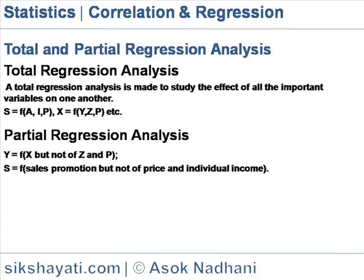Total and Partial Regression Analysis. A total regression analysis is made to study the effect of all the important variables on one another. For example, the effect of sales promotion expenditure, individual income, and price of the goods on the volume of sales are measured — this is a case of total regression analysis.